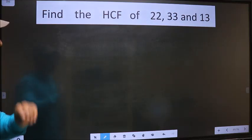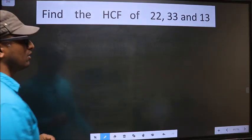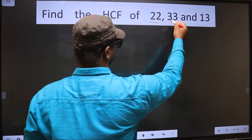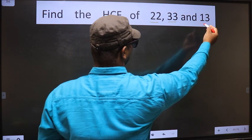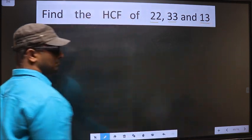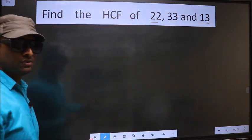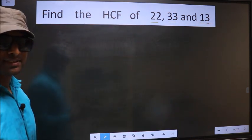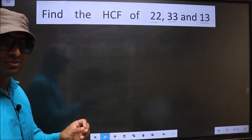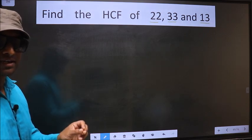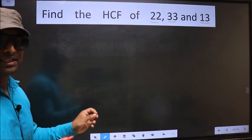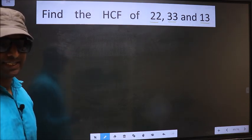Find the HCF of 22, 33, and 13. To find the HCF, first we should do the prime factorization of each number separately.